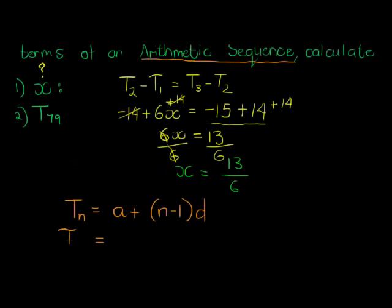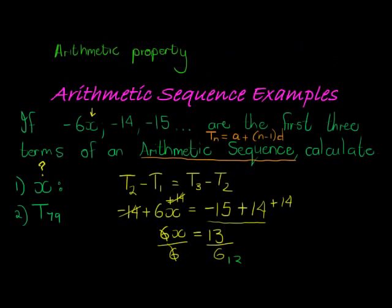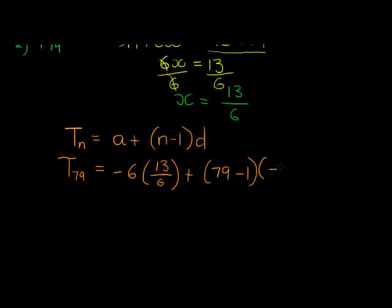So T₇₉, let's substitute what we do know. T₇₉ is equal to the first term, negative 6x. Negative 6. But instead of x, we now have a value for x, 13 over 6. Plus, we want the 79th term. So n is equal to 79 minus 1. And d is equal to, what is it? d is the difference between consecutive terms. What am I adding every time? To get from negative 14 to negative 15, I subtracted 1. So d is actually negative 1.